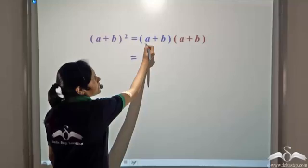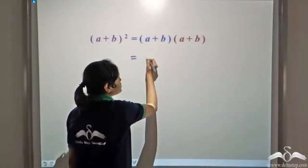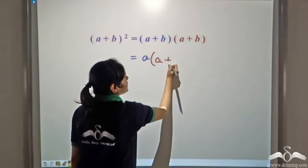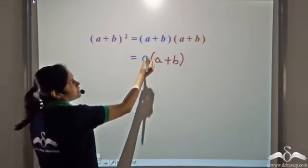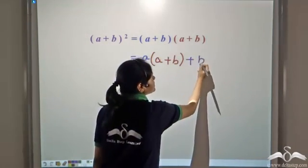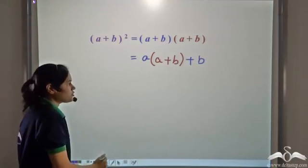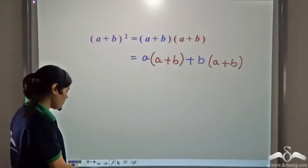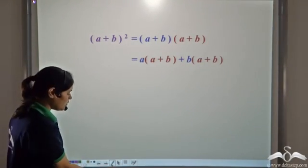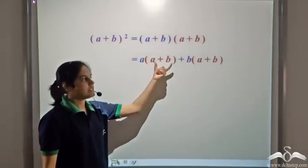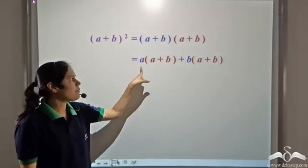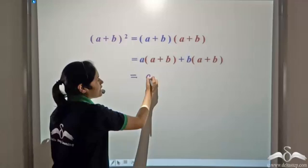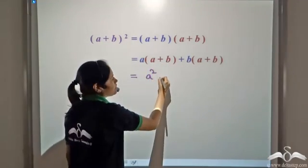So we have this a multiplied with this entire expression — a multiplied with a plus b — and again this b multiplied with this entire expression, so we have b into a plus b. Now let us multiply each term of this expression by a. So we have a into a as a square, and a into b as ab.